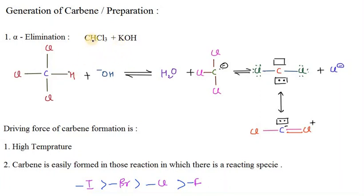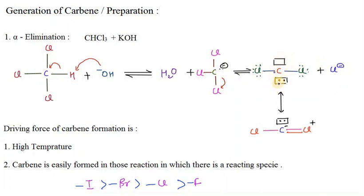When CHCl3 reacts with KOH, first there is an acid-base reaction: the hydroxide ion takes over the H+, and since there is a Cl, there will be a negative charge on the carbon. Now we have H2O and a carbon with a negative charge having three chlorine bonds. When we apply higher temperature, one chlorine will leave, giving two unpaired orbitals — one empty P orbital and one with a lone pair. This forms a singlet carbene.